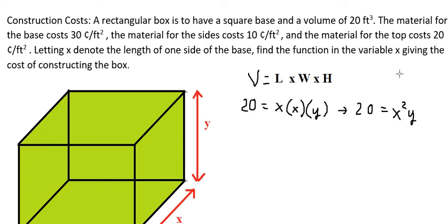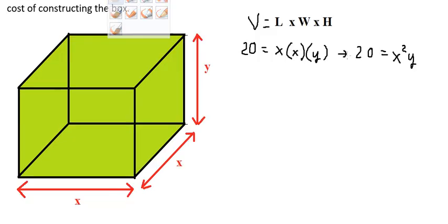On the question, they want to find the function with variable s. That means we need to change y in terms of s. So we divide both sides by s squared.